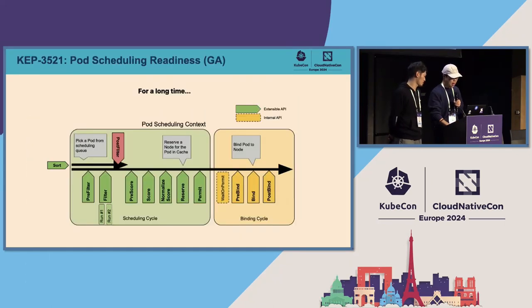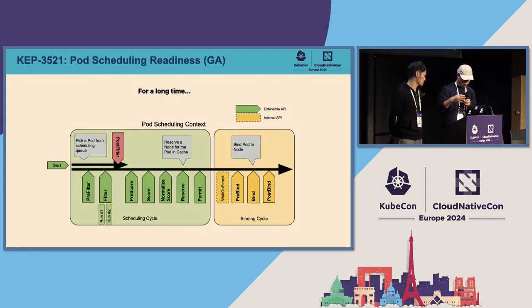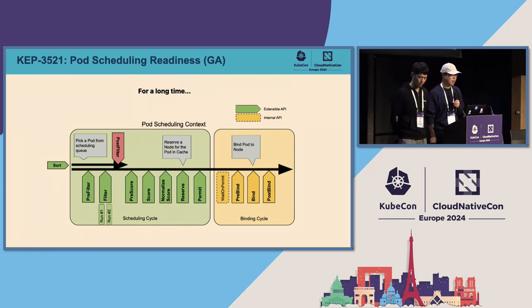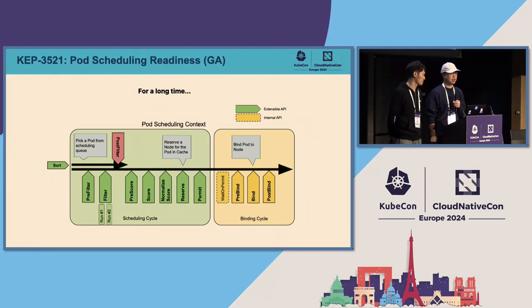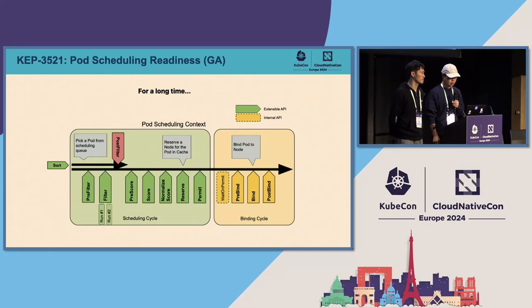Now the recent updates section. We will mention a few KEPs. KEP, if you're not familiar, is short for Kubernetes Enhancement Proposal — a formal process to track feature implementation progress.